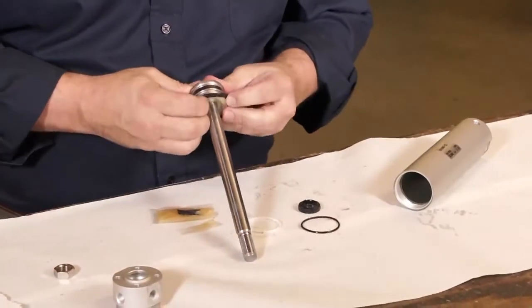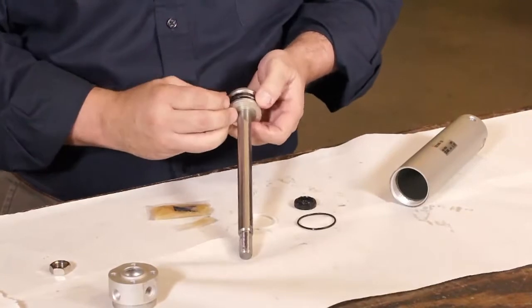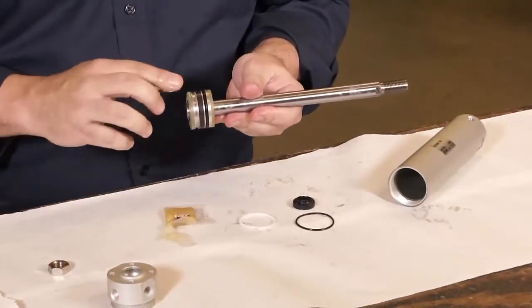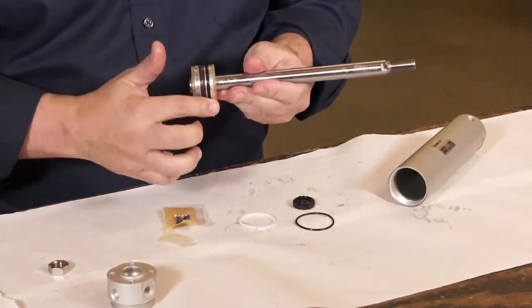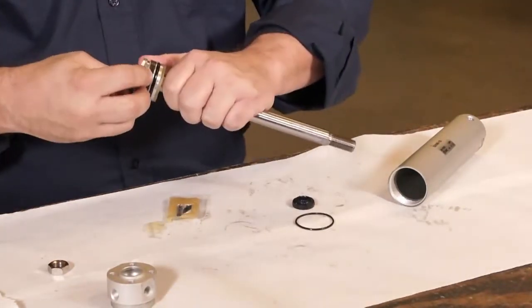Without stretching the O-ring too much, maneuver it into the groove from the rod side. Make sure it is not twisted. Cover the piston seal with a bit less than a millimeter of grease. Replace the wear ring lightly greased.